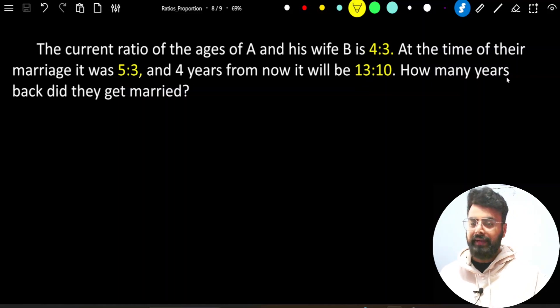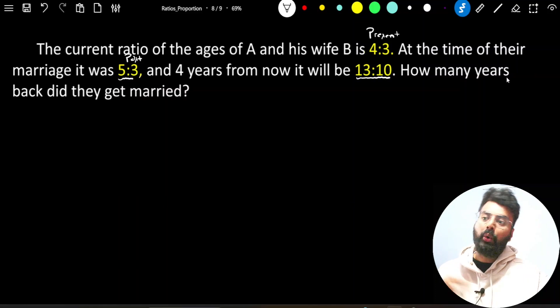If you look at the first ratio, this is the ratio for present. If you look at the second ratio, 5:3, this is for the time of their marriage, so this must be the past ratio. But if you look at the last ratio, 13:10, it is for 4 years from now, means 4 years ahead from present, so this is a future ratio.